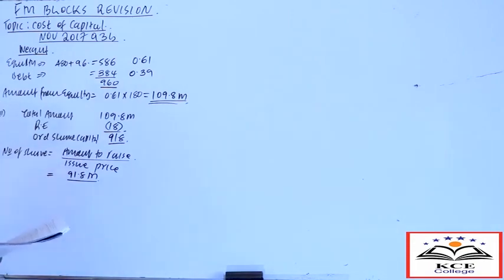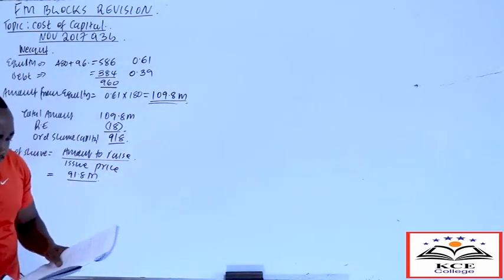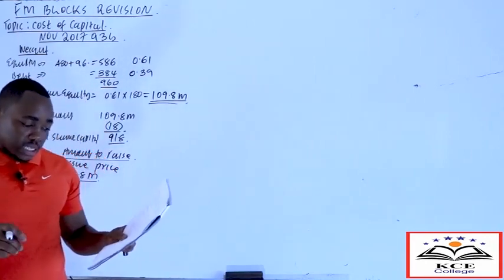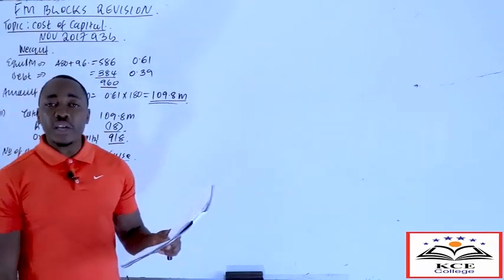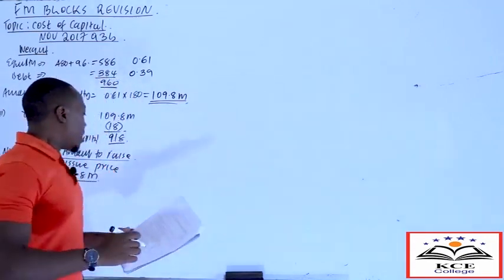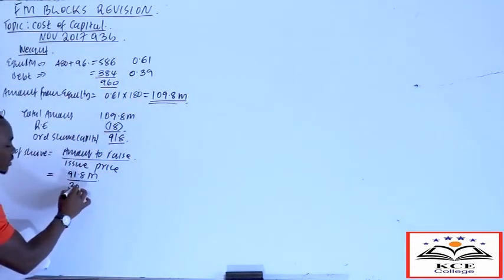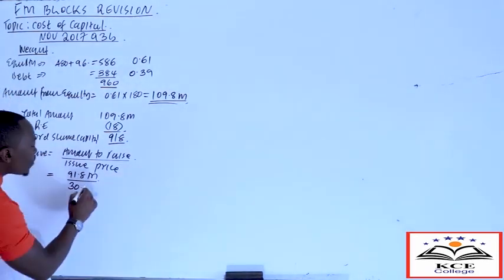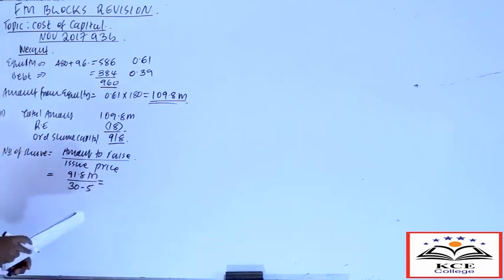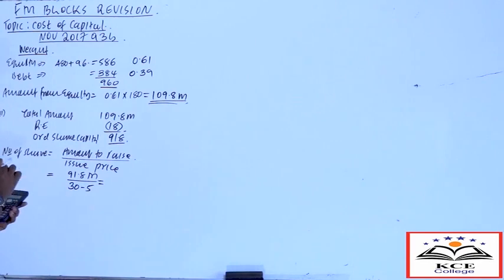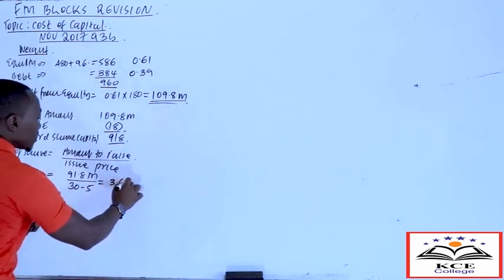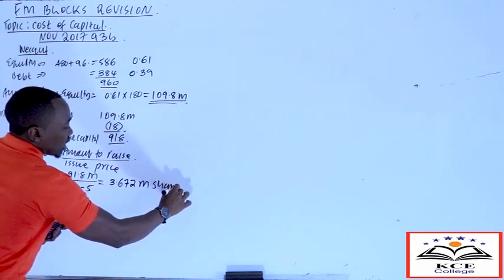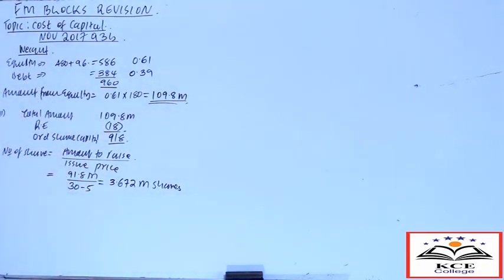The amount to raise from ordinary shares is 91.8 million. From note 2, new ordinary shares are issued at 30 shillings each with a flotation cost of 5 shillings. We subtract the flotation cost, so the net issue price = 30 − 5 = 25 shillings. Therefore, number of shares = 91.8 million ÷ 25 = 3.672 million shares. Those are the new shares to be issued to finance the project.